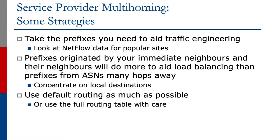Let's look at some of the strategies we might use. First, we want to take the prefixes we need to aid our traffic engineering. To do this, let's look at the traffic flow data — on Cisco, for example, it's called NetFlow. Looking at traffic flow for popular sites gives the operator a very good idea about the destinations end users are using, whether uploading data as a content provider or downloading data as an end user browsing social media and internet videos. Also, prefixes originated by immediate neighbors and their neighbors will do more to aid load balancing than prefixes from autonomous systems many hops away.